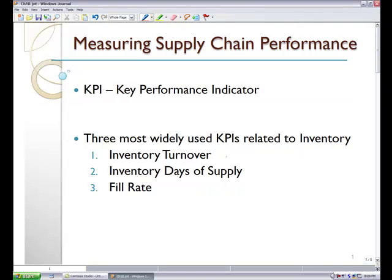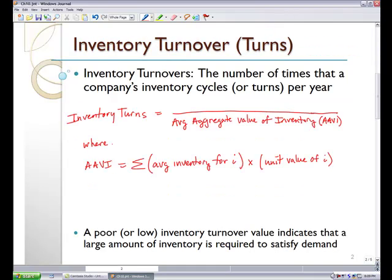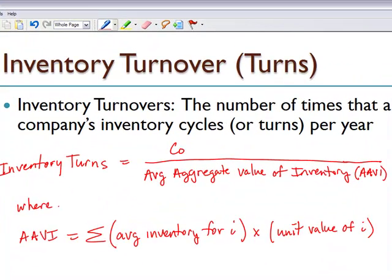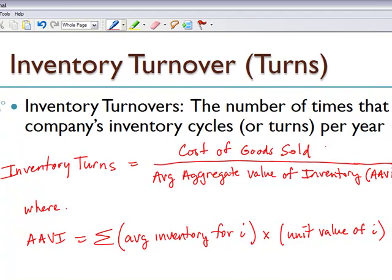The inventory turnover, or what we also call inventory turns, the inventory days of supply, and the fill rate. When we're dealing with inventory turnover, or inventory turns, that's nothing more than the number of times that a company's inventory cycles, or turns, each year. The inventory turns is equal to our cost of goods sold, or COGS, divided by our average aggregate value of inventory, what we call AAVI.